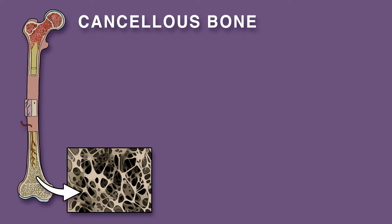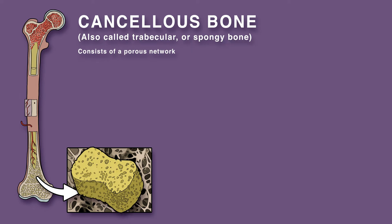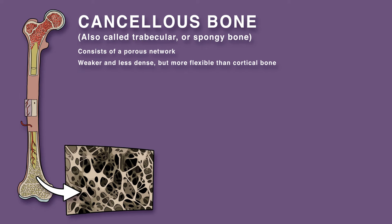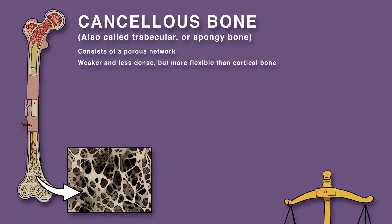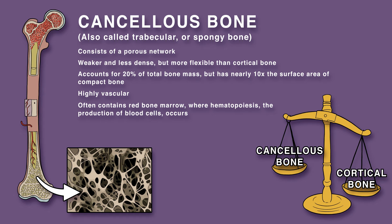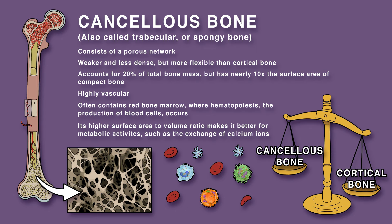Cancellous bone, also called trabecular or spongy bone, consists of a porous network. It is weaker and less dense but more flexible than cortical bone. Cancellous bone accounts for 20% of total bone mass, but it has nearly 10 times the surface area of compact bone. Cancellous bone is highly vascular and often contains red bone marrow where hematopoiesis — the production of blood cells — occurs. It also has a higher surface area to volume ratio compared to cortical bone, which means it's better for metabolic activities such as the exchange of calcium ions.